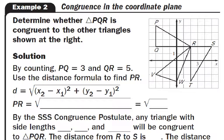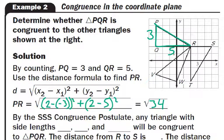Determine whether triangle PQR is congruent to the other triangles shown. We don't need to worry about the angles, just the sides. For triangle PQR: PQ we can count — that's 3. QR we can count — that's 5. For the other side, use the Pythagorean Theorem or the distance formula. Three squared is 9, five squared is 25, that adds up to 34. So PR is the square root of 34 units long. Any triangle with side lengths of 3, 5, and the square root of 34 will be congruent to triangle PQR.